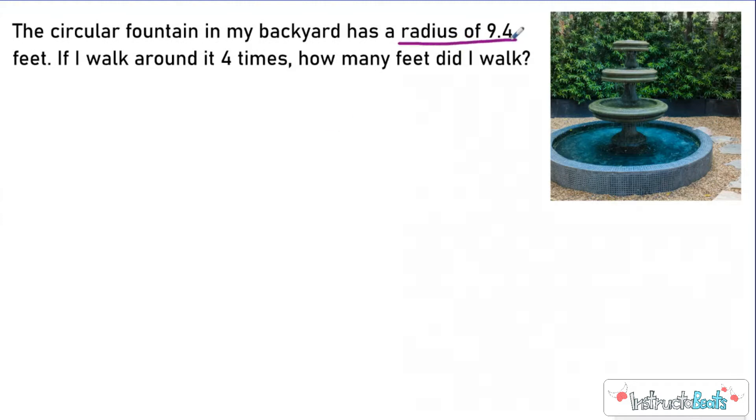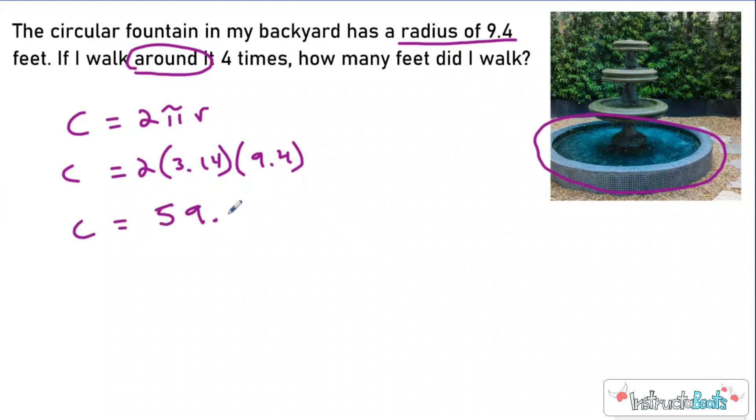So for this problem, they gave you the radius of 9.4. And you know that you're walking around this fountain, so you make four laps around the fountain. This is one of my favorite real life types of problems because when you're walking around something, you're finding the circumference. So a lot of people will just go ahead and find their circumference. So they'd use circumference equals 2πr. And when you do that, you plug in 2, 3.14 as pi, and then your radius would be 9.4. And when you solve that, you would get 59.032. So that's going to be the circumference of this fountain.